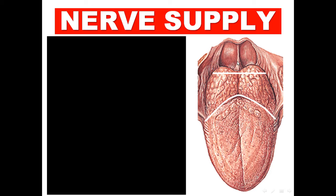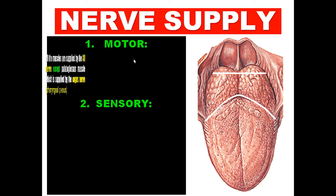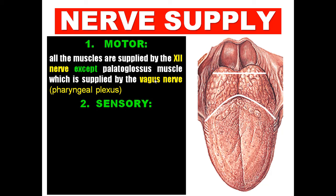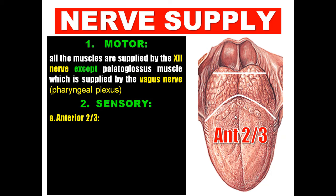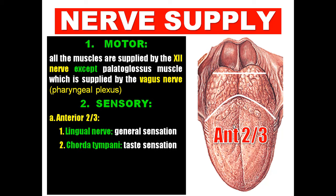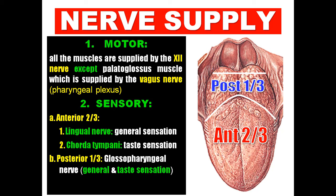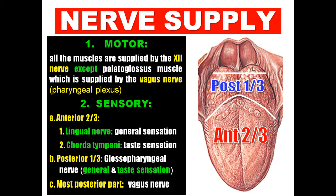Regarding the nerve supply of the tongue: the tongue has motor and sensory nerve supply. For the motor supply, all muscles of the tongue are supplied by the hypoglossal nerve, except the palatoglossus, which is supplied by the vagus nerve through the pharyngeal plexus. For sensory supply: the anterior two-thirds and the posterior one-third have different nerve supplies, and the most posterior part is supplied by the internal laryngeal branch of the vagus.